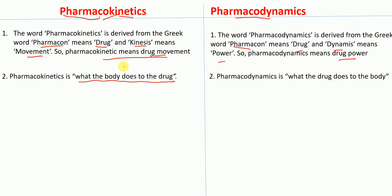Pharmacokinetics is about what the body does to the drug. Pharmacodynamics is about what the drug does to the body. For pharmacodynamics, note the D — it's about what the drug does to the body.